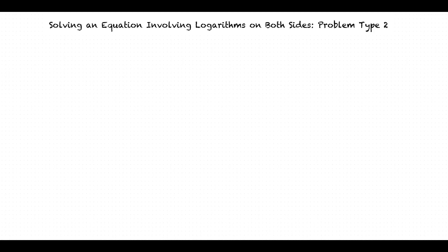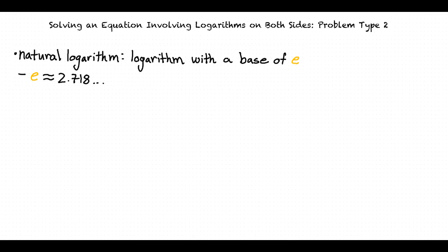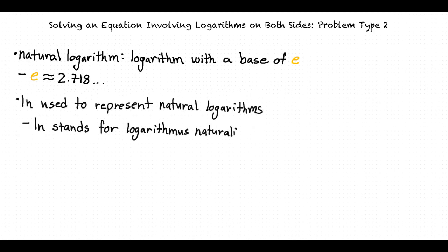Let's go over what a natural logarithm is. A natural logarithm is a logarithm with a base of e. e is known as Euler's number, and it is roughly equivalent to 2.718. A natural logarithm is represented with ln, and fun fact, it stands for logarithmus naturali, which is a Latin equivalent to natural logarithm.